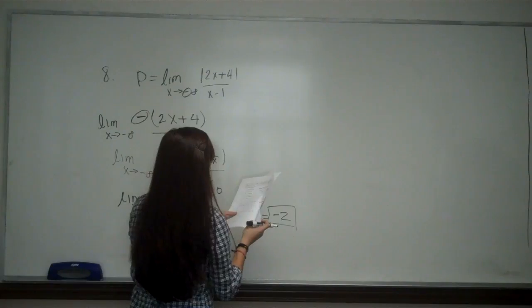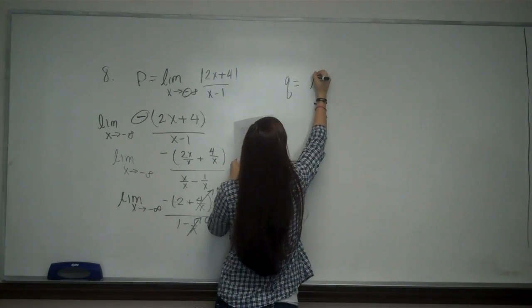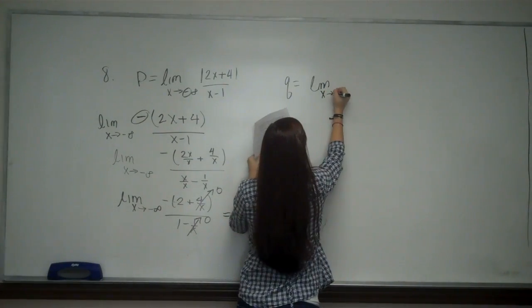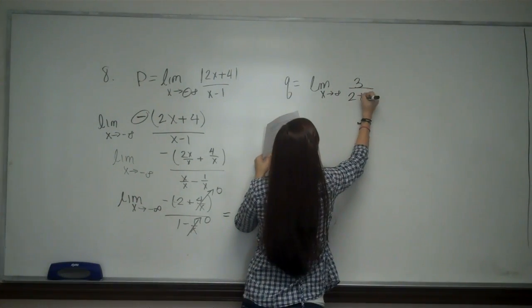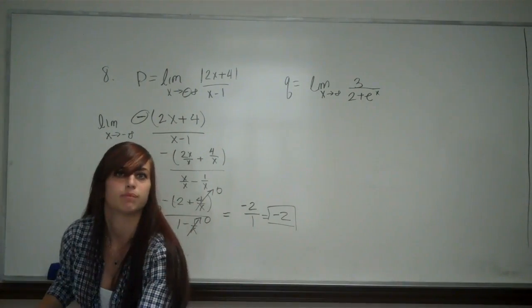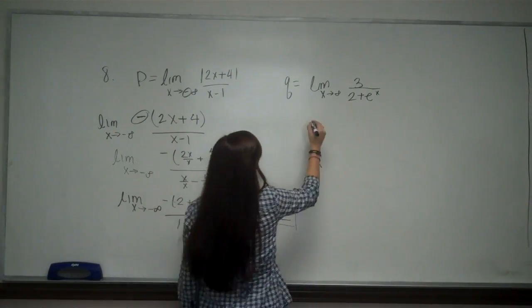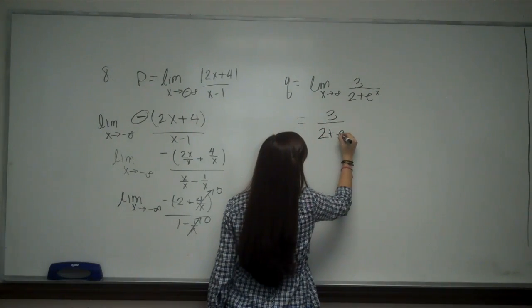Next, I'm going to have, they told me that Q is equal to the limit as X approaches infinity of 3 over 2 plus E to the X. And from here, I can pretty much just plug it in. So I think this is going to equal 3 over 2 plus E to the infinity.